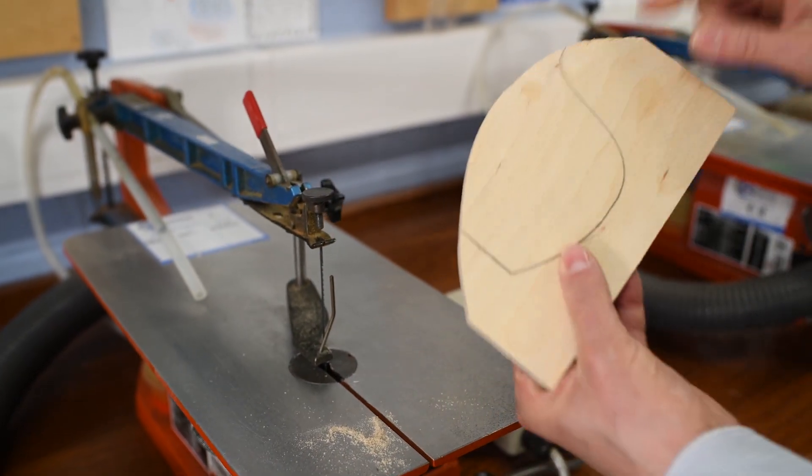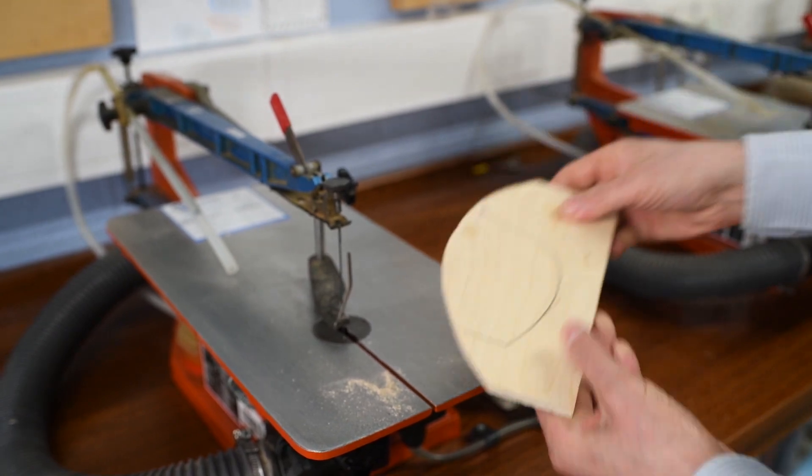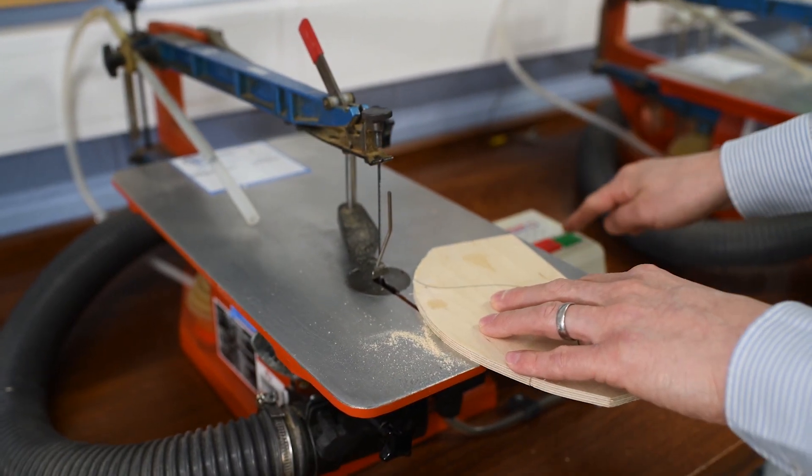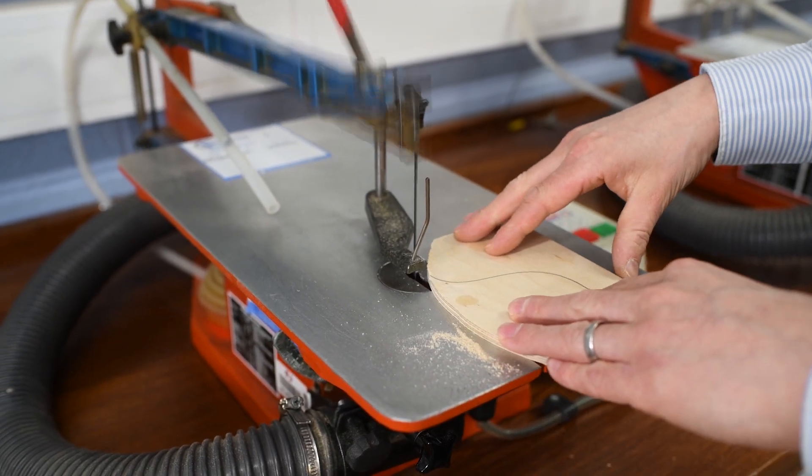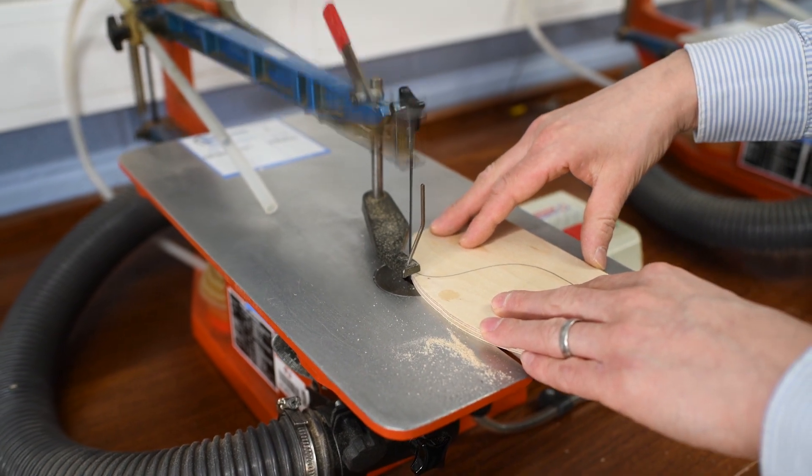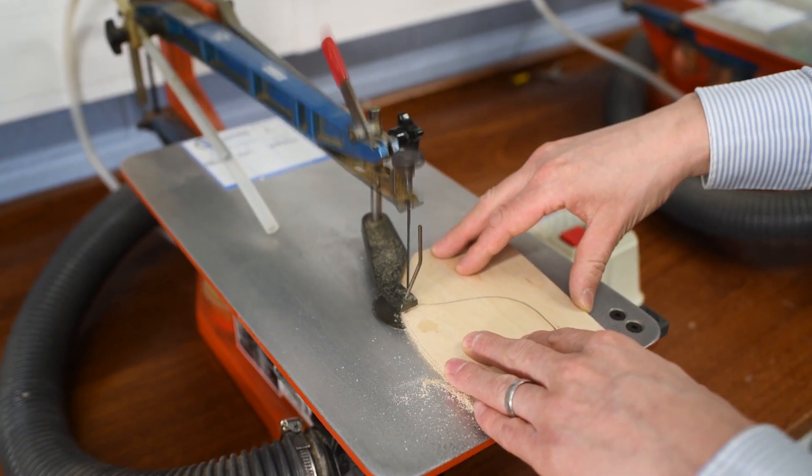Next, I'm going to do this curved arc. So I'll turn the machine on again with the green button. And now I'm going to rotate the material as I cut it.